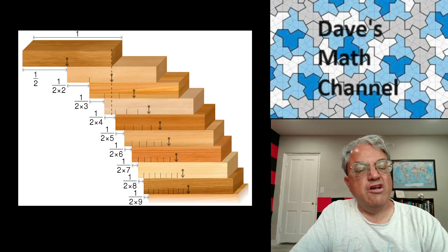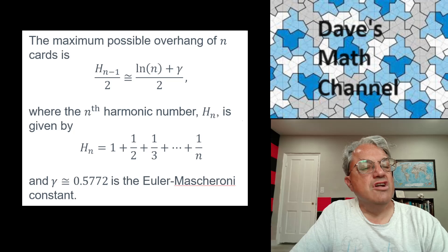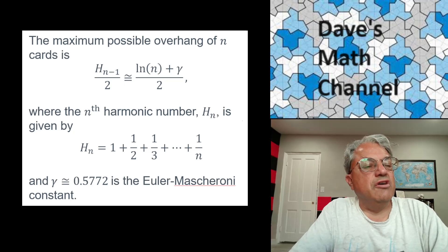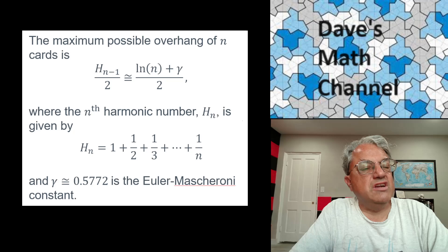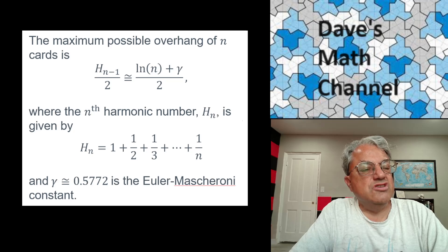There's a name for these numbers, by the way. The sum of the reciprocals of integers up to some bound is called harmonic numbers. So here's the general formula. If you want to find the maximum possible overhang of n cards or n blocks, whatever you're dealing with here, we started with cards, so let's consider cards. It turns out the formula is h_{n-1}, that's the n minus first harmonic number divided by 2.